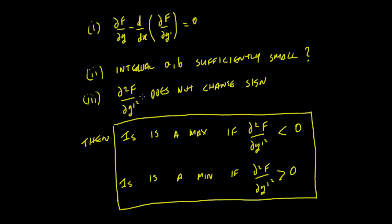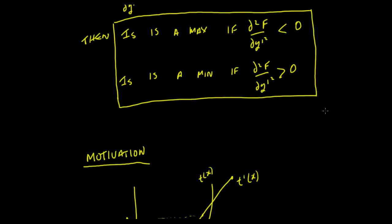If these conditions hold, then the stationary point will be a maximum if ∂²f/∂y'² is less than zero, and it will be a minimum if ∂²f/∂y'² is greater than zero. We won't go through the proof of that for a few videos yet.